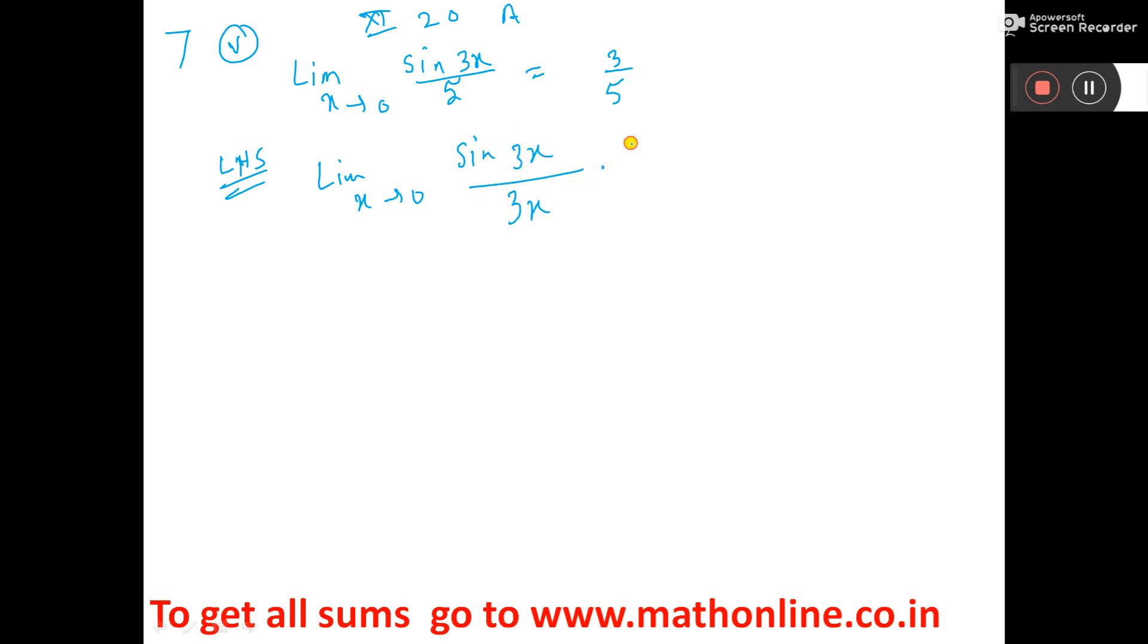So this 3x you divide and multiply by 3x and 5x was there. So this 5x you take. So what I did? I divide by 3x multiply by 3x. Now this x times x cancel.